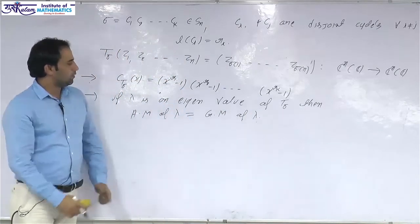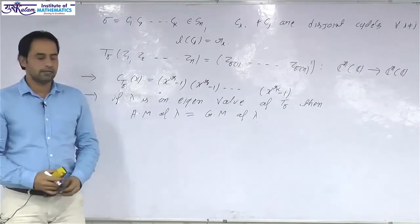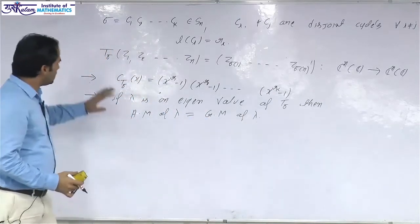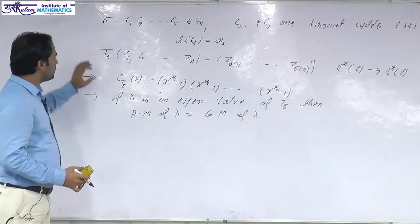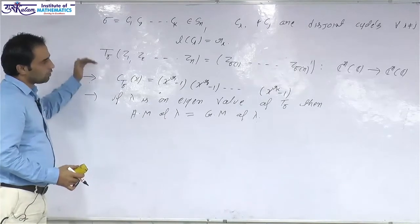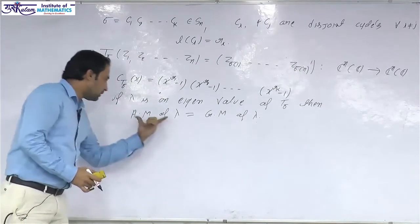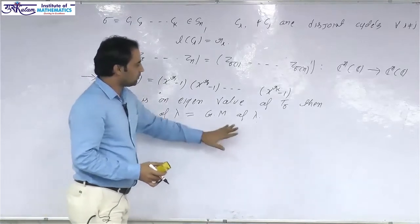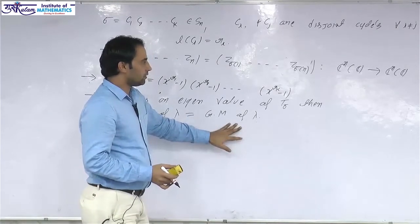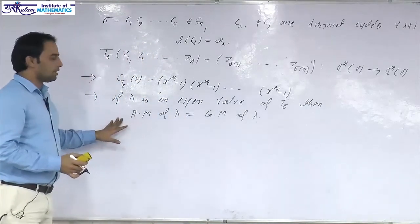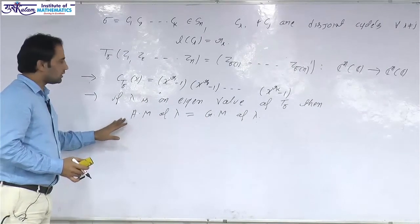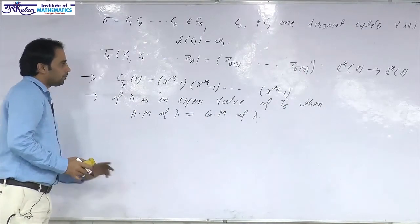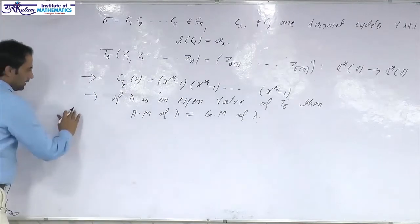The next property is that the algebraic multiplicity of each eigenvalue λ is always the same as the geometric multiplicity of λ, where geometric multiplicity is the number of linearly independent eigenvectors corresponding to λ. So in this permutation operator, algebraic multiplicity always equals geometric multiplicity for each eigenvalue.